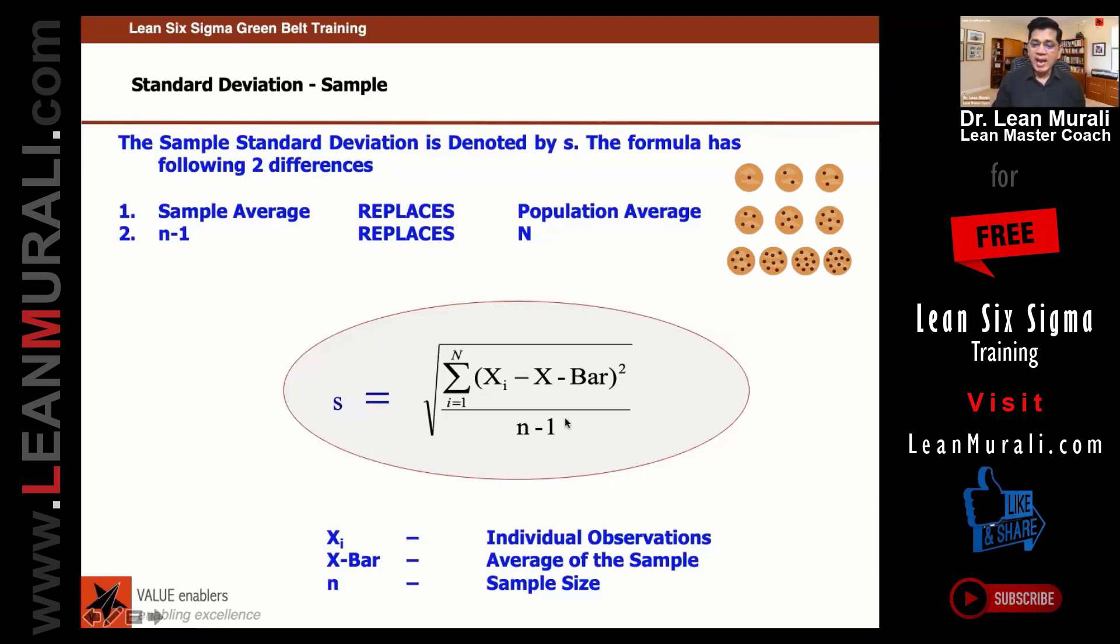If x̄—the average weight of 10 biscuits—is, say, 25 grams, some biscuits might be 24 grams, some might be 26 grams. You find out the difference, square it, add all that, divide by n-1, and that gives you the standard deviation. But you need not worry about this formula.